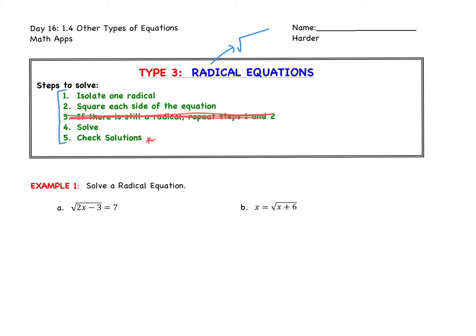Example one is a radical equation because it has a radical. Step one is already done because the radical is alone. So we're going to square both sides. On the left side, the square root and the square undo each other, leaving just 2x minus 3. On the right side, 7 squared gives us 49. Now we're down to a normal linear equation. I'm going to add 3 to both sides, getting 2x equals 52, so x equals 26. You might need a calculator — a graphing calculator or your phone might be helpful for when you're working on the homework.